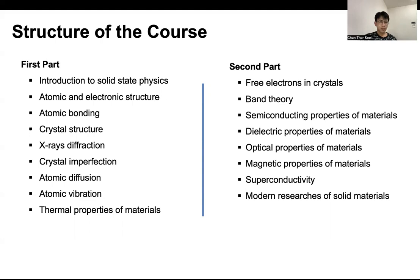Then, in another part of the sessions, we need to understand how atoms are arranged in the material — so we need to understand the crystal structure of the material. To do characterization of the crystal structure, we need to understand X-ray diffraction, which will help you characterize how atoms are arranged in the material. Then we need to study crystal imperfections — how the imperfections and perfections of the crystal define the properties of the material. After that, we go to atomic diffusion and atomic vibration, which give the thermal properties of the material.